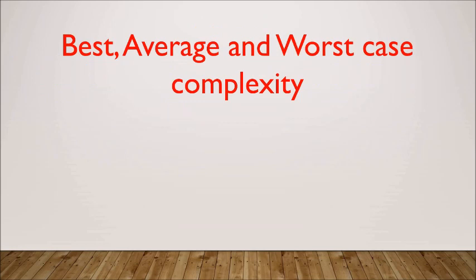The first topic is best case, average case, and worst case complexity. When we are writing a program, worst case is the case in which we have to take the maximum number of steps. For example, if we are using a loop with a condition, worst case means it has to execute all iterations of the loop until the condition is true. Best case is when in the first iteration itself the condition is true, so it will not execute the next iteration. Average case is the average number of iterations it has to take.